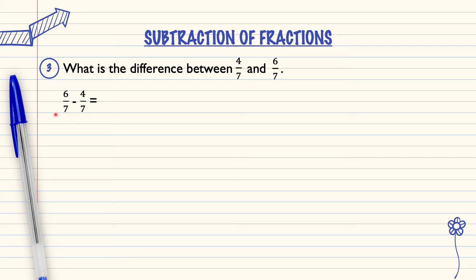As we can see, the denominator is the same. So we can subtract the numerator: 6 minus 4 equals 2 over 7. So this is the answer.